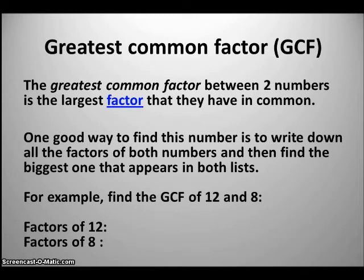So first of all, the greatest common factor between two numbers is the largest factor that they have in common. One good way to find this number is just to write the factors of both numbers and find the largest one that appears in both.